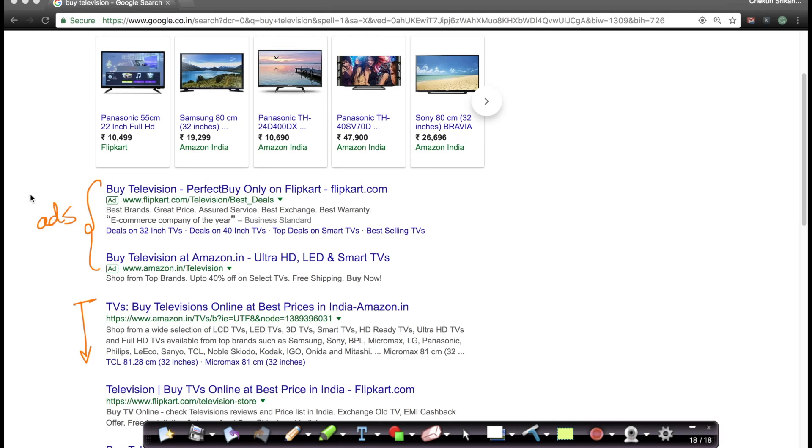These are called sponsored search ads, and these are called organic search results. Each of these companies, in this case Flipkart and Amazon, pays Google whenever somebody who searches on Google clicks on this. If I click on this and go to Flipkart, Flipkart would pay some small amount to Google. And by the way, this contributes to the largest amount of revenue that Google makes. Google is a multi-billion dollar business today because of search ads like this. This is the cash cow. This is how they make billions of dollars every year. A lot of what Google provides you for free is free because Google can make money using search ads like this.